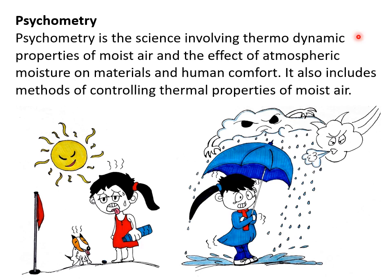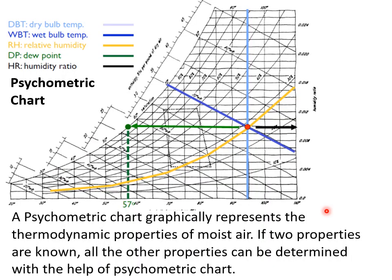Psychrometry is the science involving thermodynamic properties of moist air and the effect of atmospheric moisture on materials and human comfort. A psychrometric chart is a graphical representation of the thermodynamic properties of moist air. If two properties are known, all other properties can be determined. At the x-axis we indicate dry bulb temperature, at the y-axis relative humidity, and the curvilinear line indicates the wet bulb temperature. We use this psychrometric chart in the design of HVAC systems.